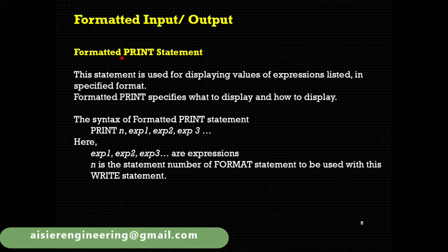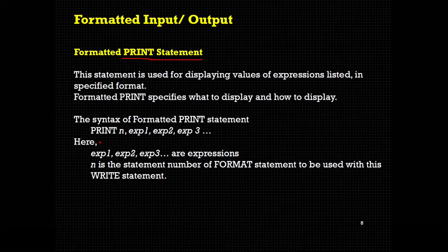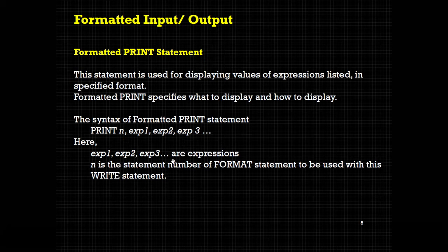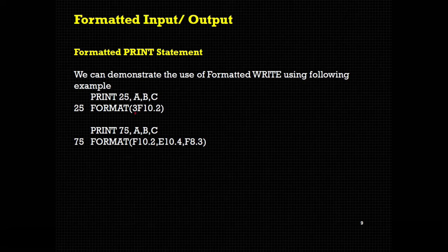Similar to the write statement, there is a print statement — the formatted print statement. The syntax of the unformatted print statement was: print, asterisk, comma. Now instead of the asterisk it is replaced with n. The syntax is the same: expression 1, expression 2, expression 3. The same examples apply but with print statements instead of write statements. Why there are two statements in Fortran for output — write and print — we are going to see in upcoming videos.